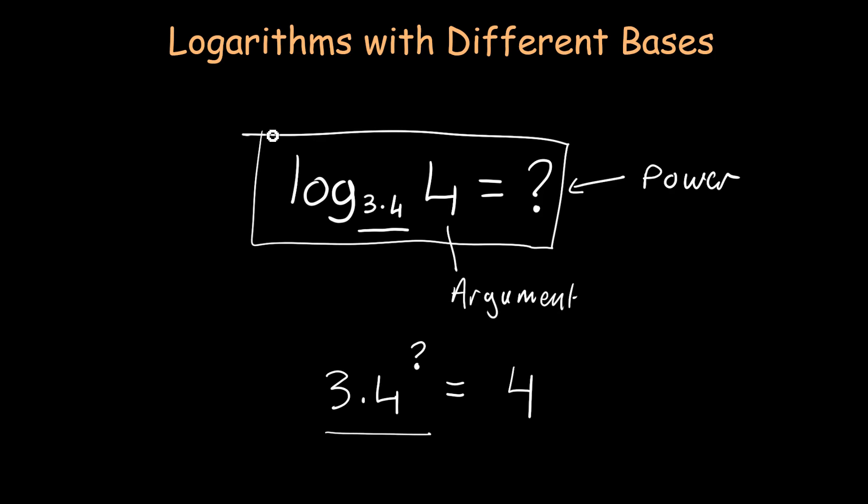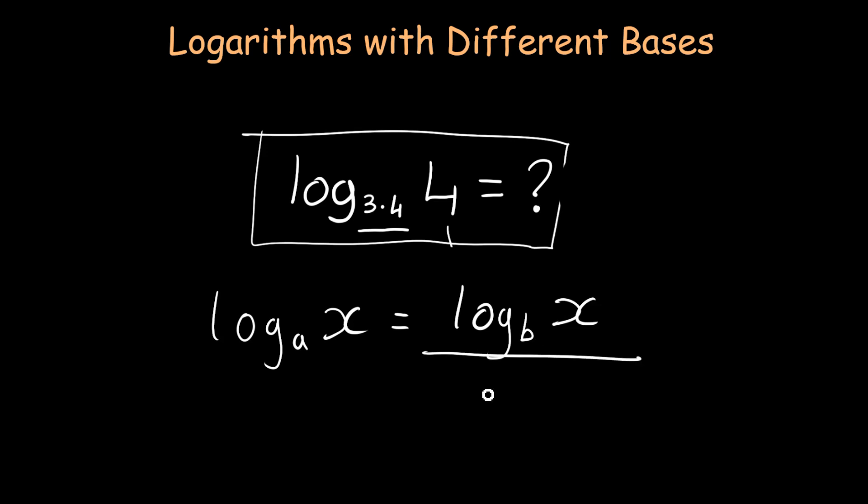And I'm going to write this out now. So the formula is log to the base a with an argument of x, which is equal to log to the base b with an argument of x, divided by log to the base b with an argument of a.